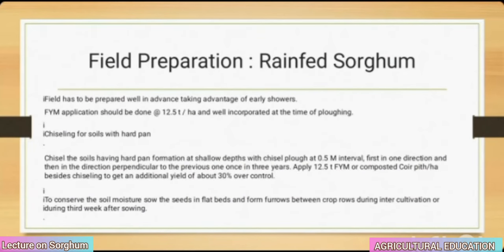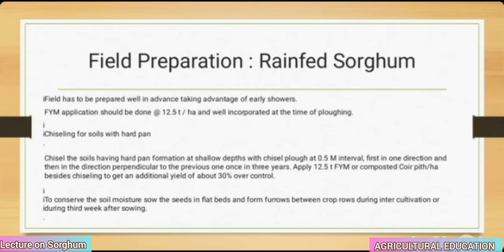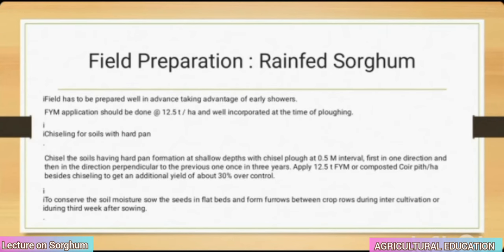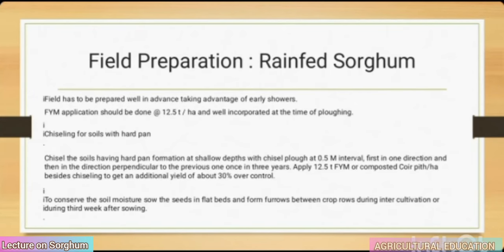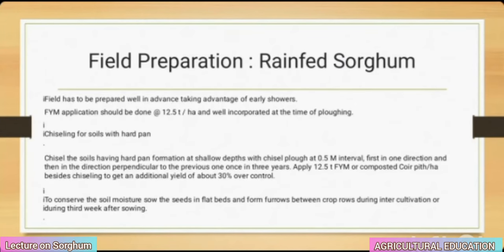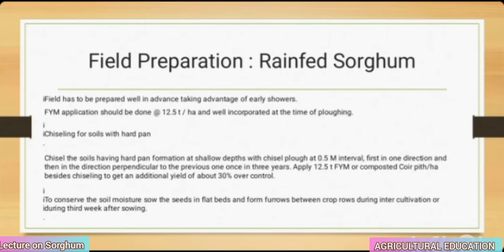Field preparation for rain-fed sorghum: the field should be prepared well in advance taking advantage of early showers. Farmyard manure should be applied at the rate of 12.5 tons per hectare and well incorporated at the time of clod-breaking. For soils with a hardpan, chisel the soil at 0.5 meter intervals — first in one direction and then perpendicular — once in three years. Apply 12.5 tons of farmyard manure or composted coir pith per hectare besides chiseling to get an additional yield of about 30% over control.